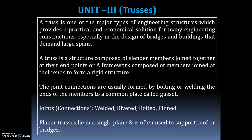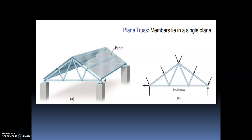The first type is a planar truss, which lies in a single plane and is often used to support a roof or bridges. Members lie in a single plane. You can see here these are the members of a plane truss — this is an example of a roof truss, showing how the members are joined together.